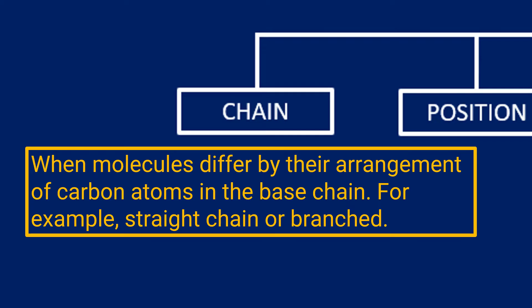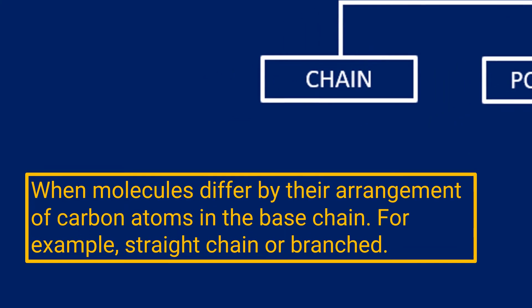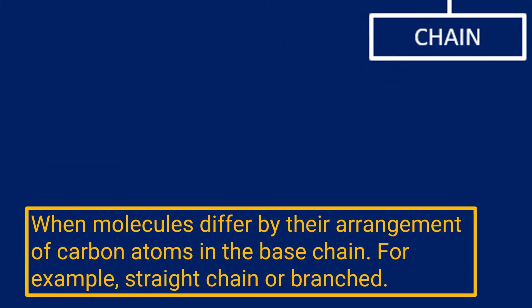Chain isomerism is when the molecules only differ by their arrangement of the carbon atoms in the base chain. The two main examples here would be straight chain and branched. If I pick a molecule, if I go for C5H12, you might assume that that's just pentane, and pentane would be one of the isomers.